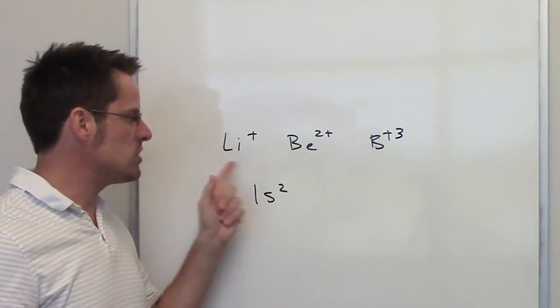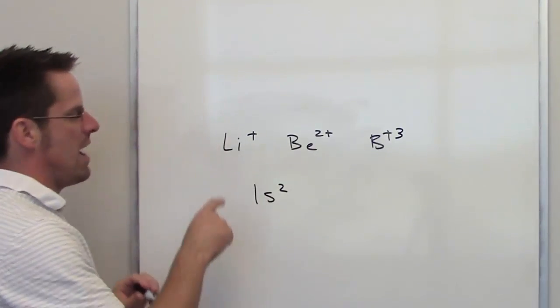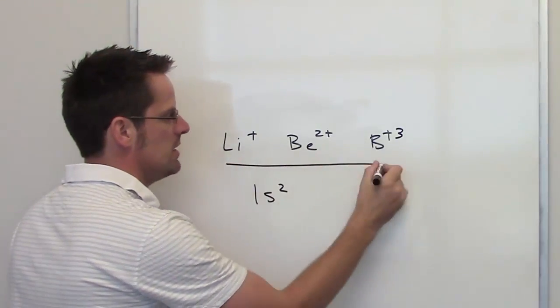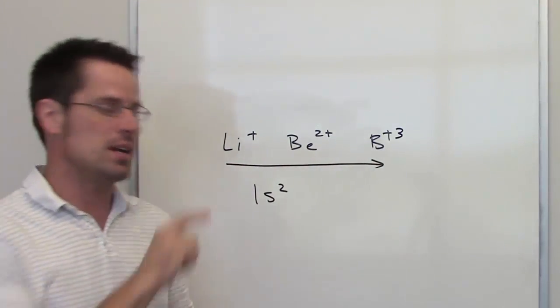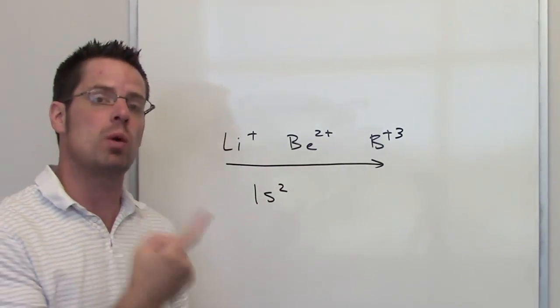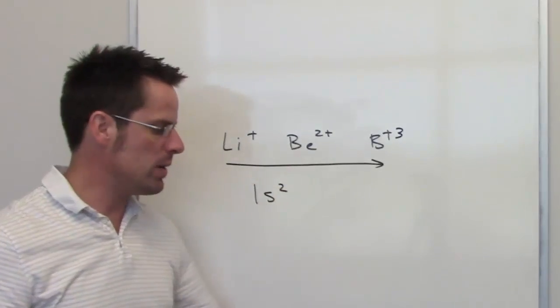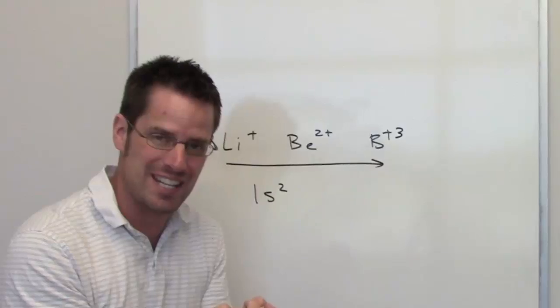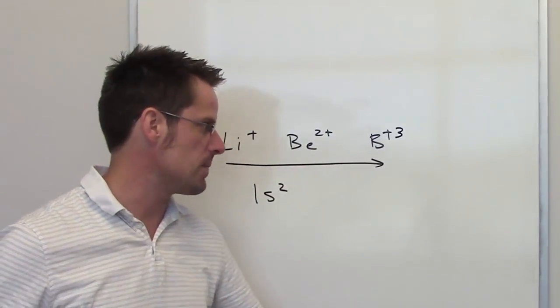The major difference between each of these elements is that we have one more proton in the nucleus as we go from left to right. Just as I said regarding the trend of going across a row on the periodic table, because each of these atoms has one more proton than its predecessor, we'd expect that addition of another proton in the nucleus to pull the electrons closer and closer.